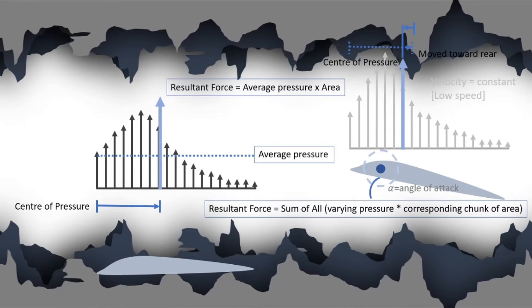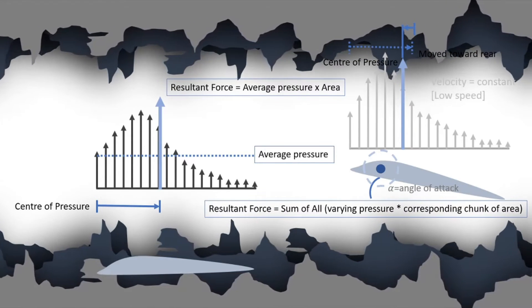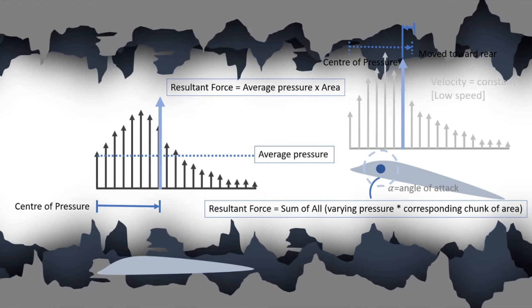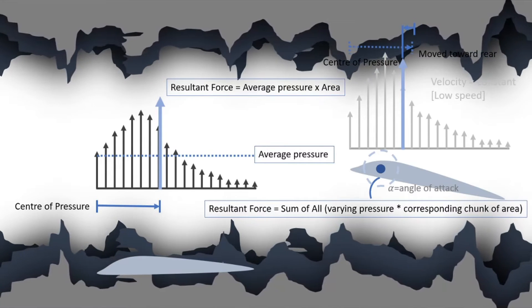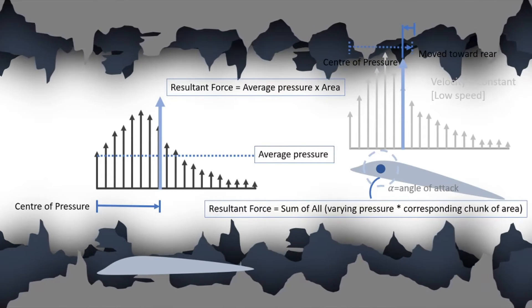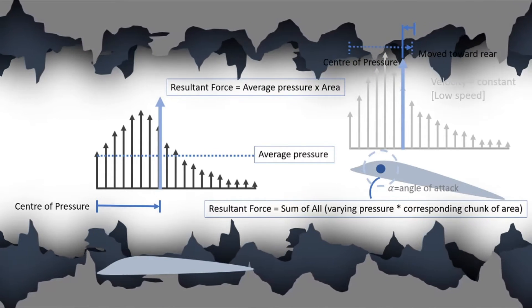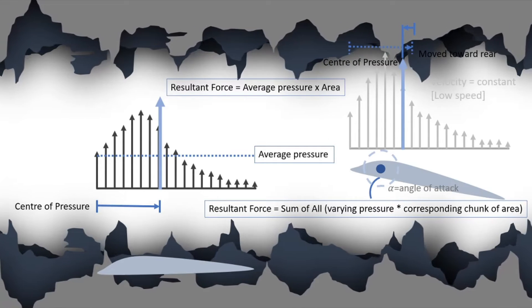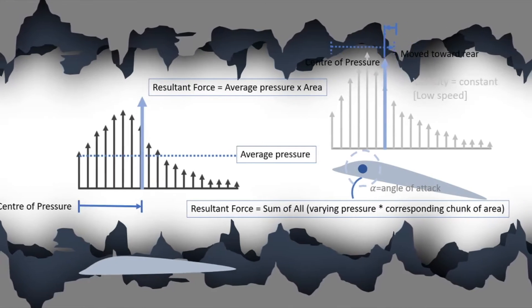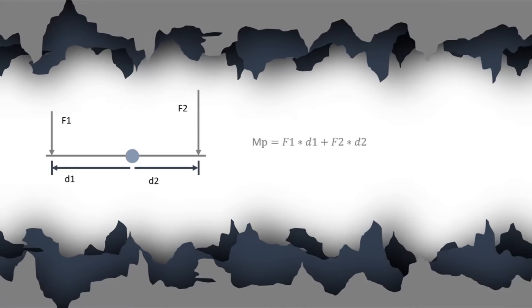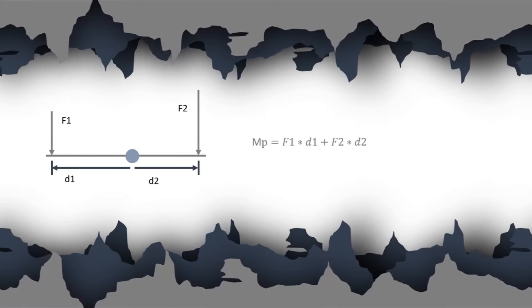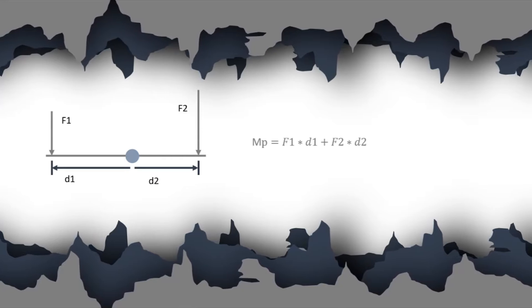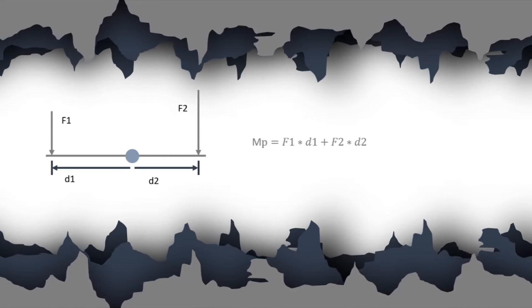Therefore you cannot use the center of pressure for most calculations — you need another stable point. As a prerequisite, let us revise how to find the moment at one point. The moment at one point is the sum of all forces multiplied by the corresponding distance.